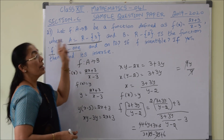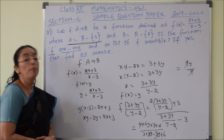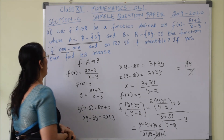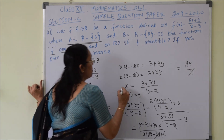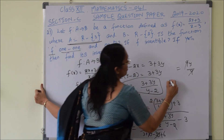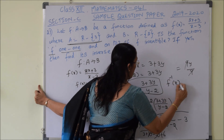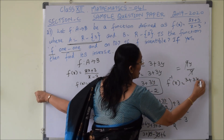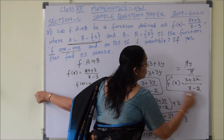Since f is both one-to-one and onto, it is an invertible function. The inverse is f⁻¹(x) = (3 + 3x) / (x - 2).